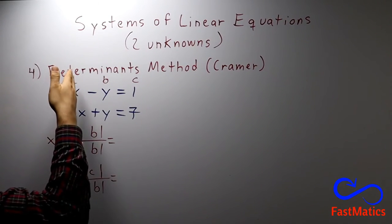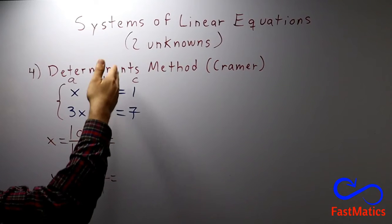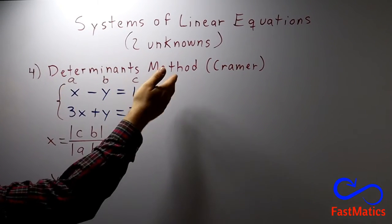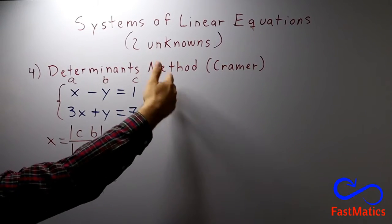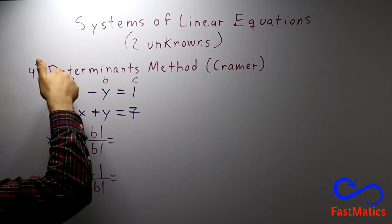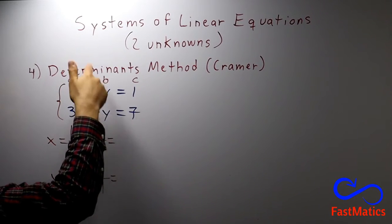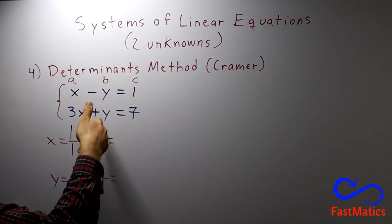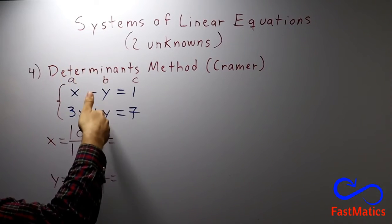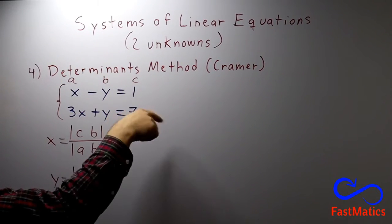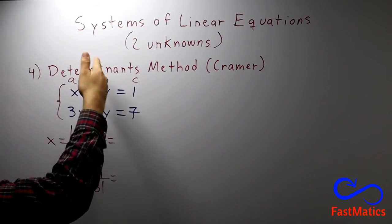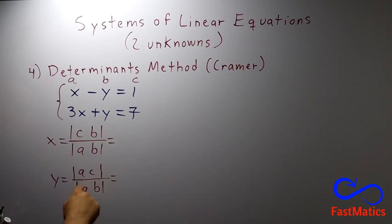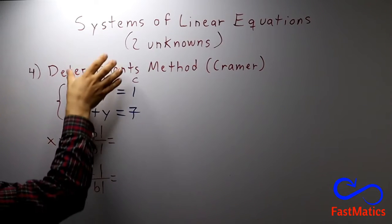And in the denominator, always the coefficients with the letters: Ab. If you have x, y, z — the same thing. If you are calculating x, the constants d go in the x column: d, b, c. If calculating y: a, d, c. If calculating z: a, b, d. And in the denominator always abc — the coefficients with the letters.